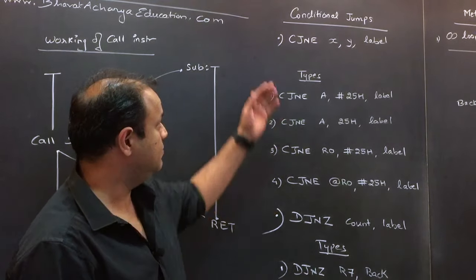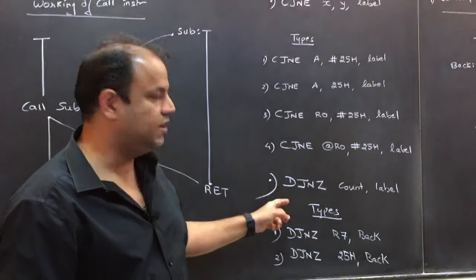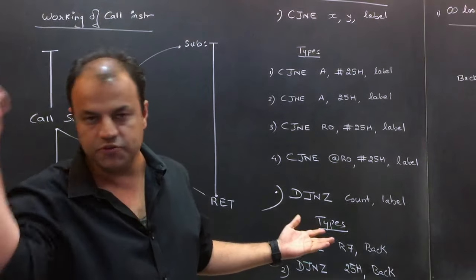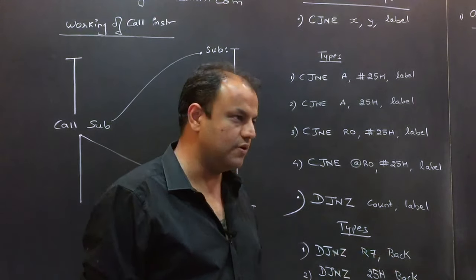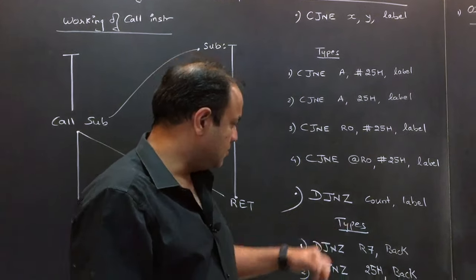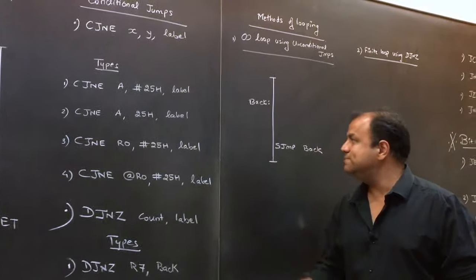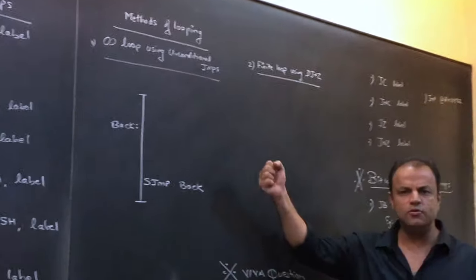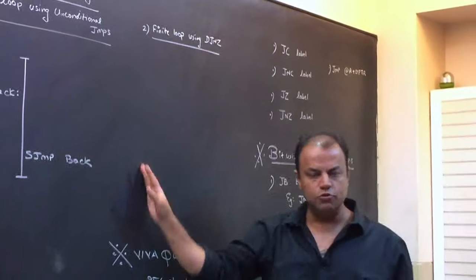Then we'll come to the conditional jumps, the ones that I use much more often in programs. There is something called CJNE, it has various types. There's something called DJNZ, the most important instruction of all of them in terms of usage, in terms of programming. Every loop in 8051 is made using DJNZ. This is like your for loop instruction. I'm going to teach you the various types of DJNZ. Like I mentioned about looping, I'm going to show you how to make loops. First we'll make an infinite loop, then we'll see various examples of finite loops.